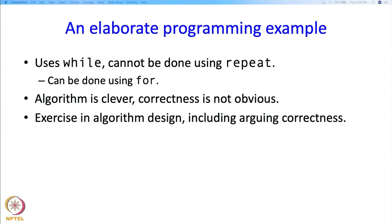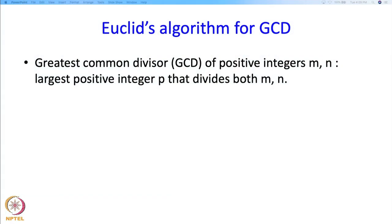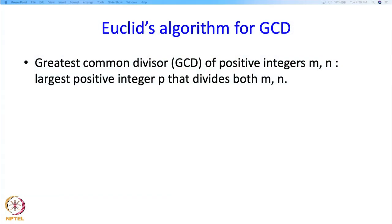So we are going to derive the algorithm and argue its correctness because the correctness is not going to be too obvious. So what is the problem? We need to find the greatest common divisor of two numbers and we are going to derive Euclid's algorithm.